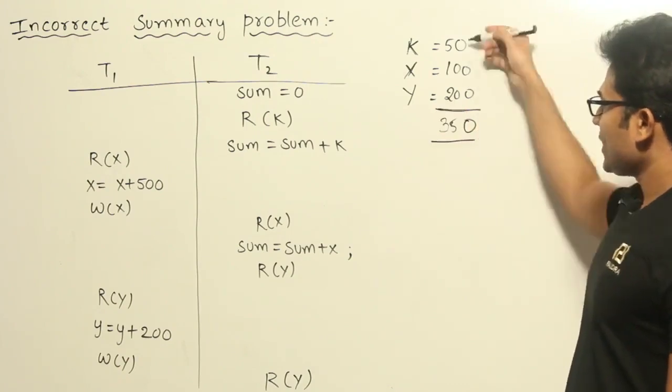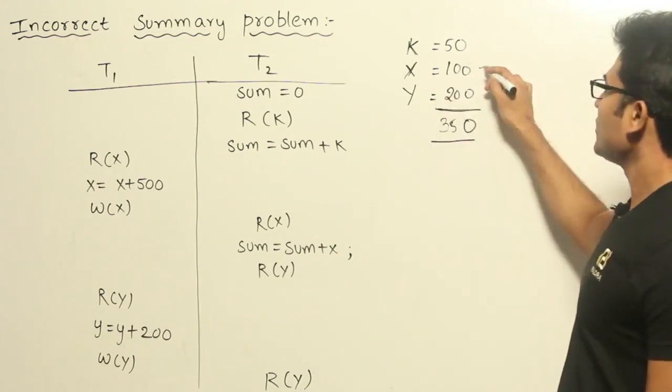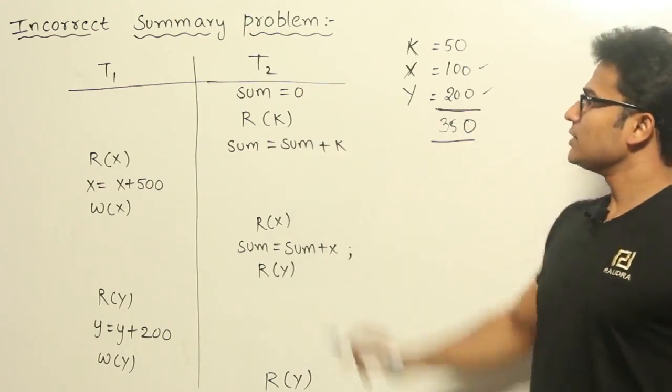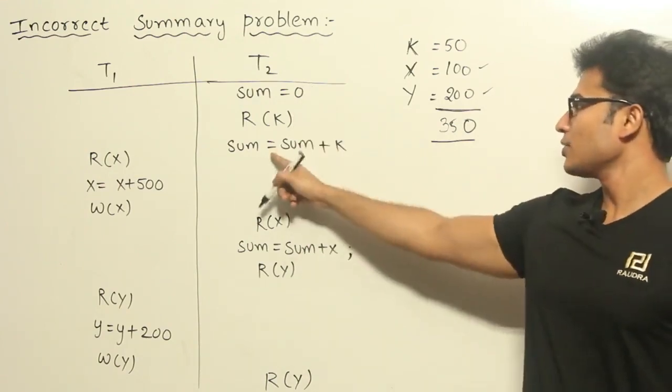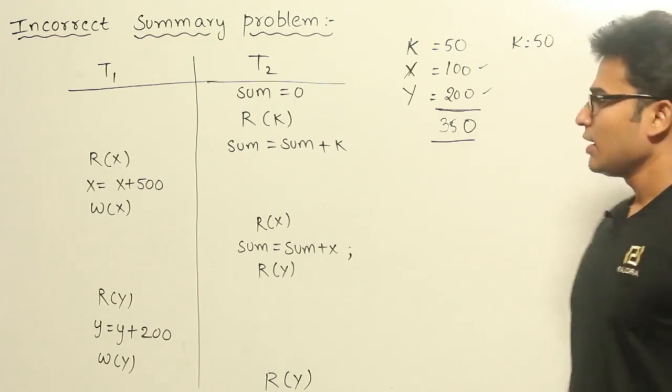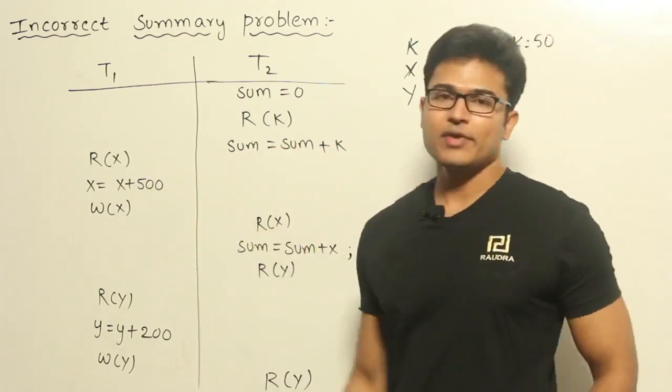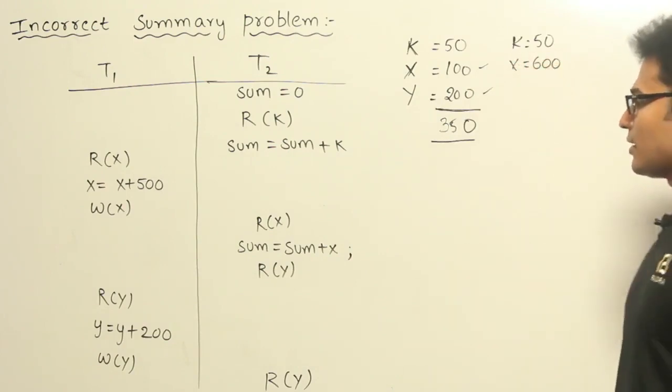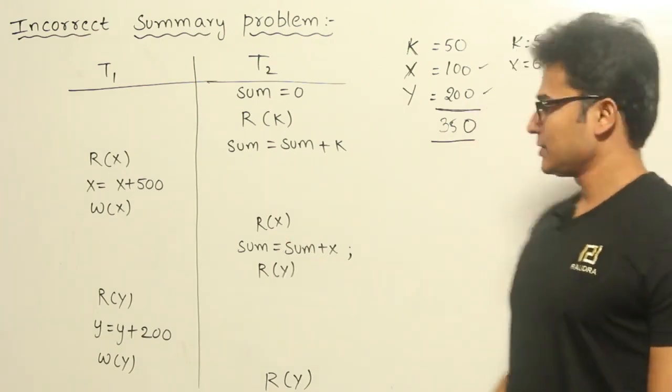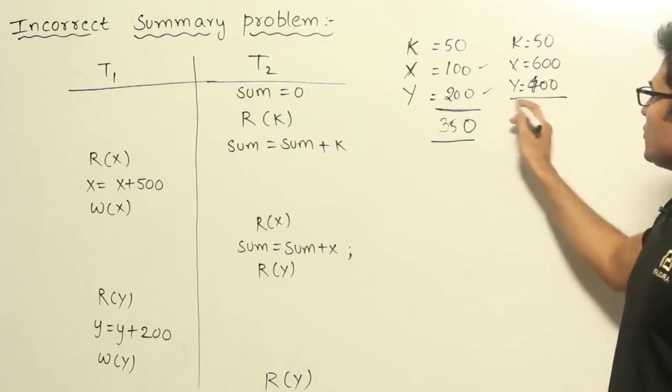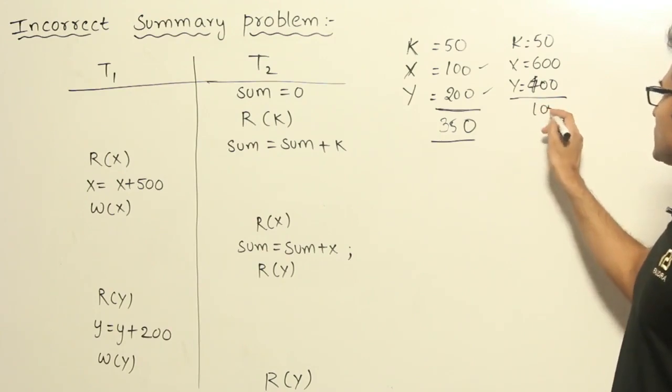But then while adding them, if some of the values are going to change in the middle, then it is going to show you a different number. For example, now let us say you have started with the sum equal to 0 and then you read the value of K and you add it to sum, which means you have kept K equal to 50 only. And then after reading K, value of X has changed. Now value of X is increased by 500, which means the value of X has become 600. And then you are adding the value of X. And again, Y has also been changed to, let us say 400. Now you will get a different summary as 1050, right? This is what the summary you are going to see.